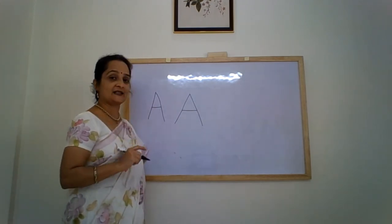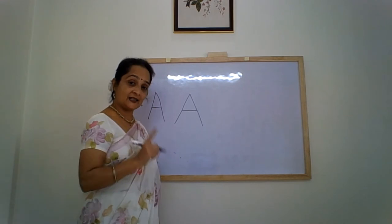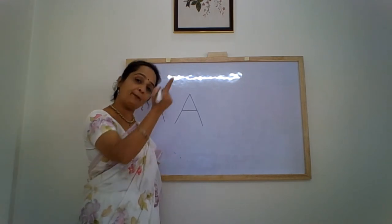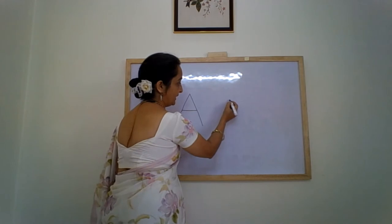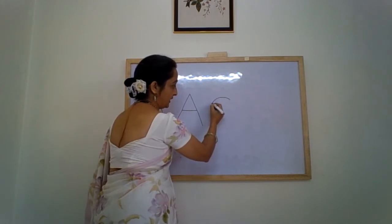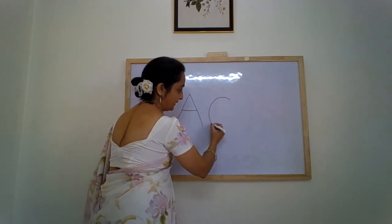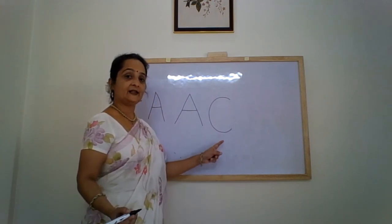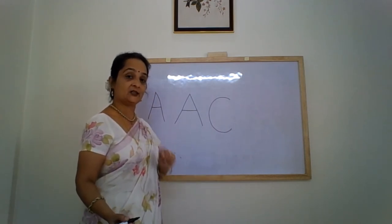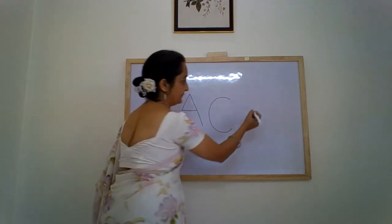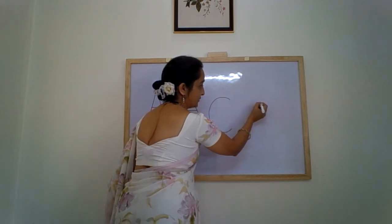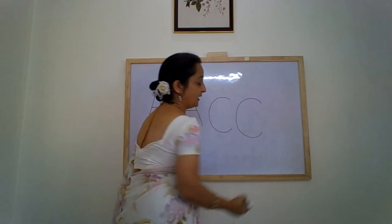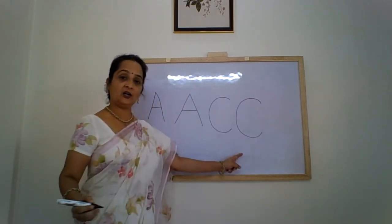The next letter is C. C is written with the help of a backward curve — a backward curve. Letter C. Let's see it one more time. Letter C is written with the help of a backward curve pattern.